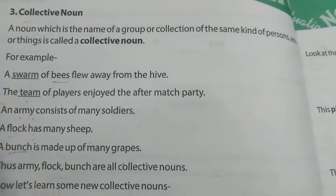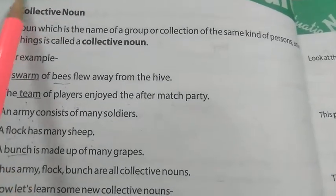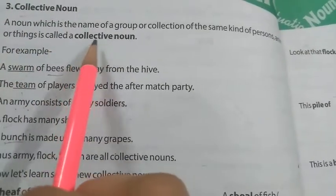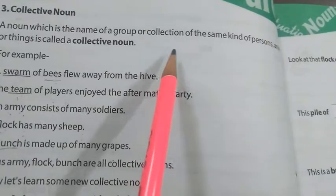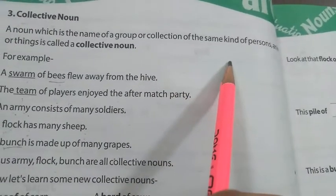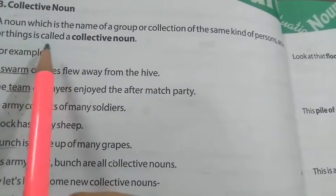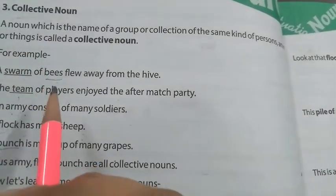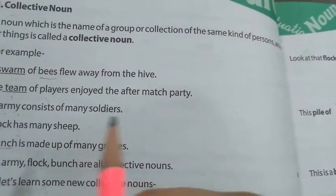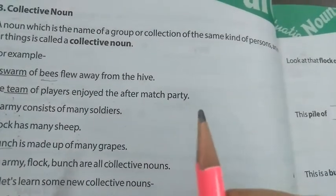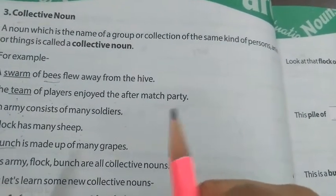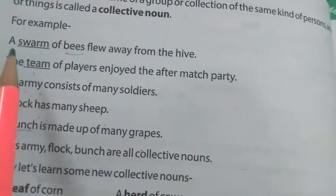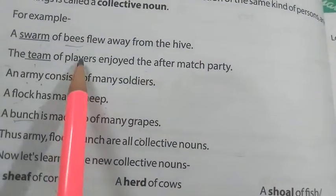A noun which is the name of a group or collection of the same kind of persons, animals, or things is called a collective noun. So a collective noun is a name given to any particular group or collection of things, persons, or animals. Now let's see a few examples — for example, 'a swarm of bees flew away from the hive.'